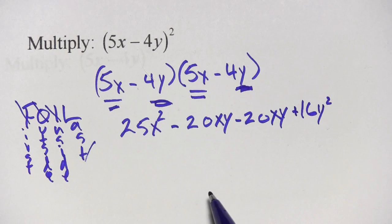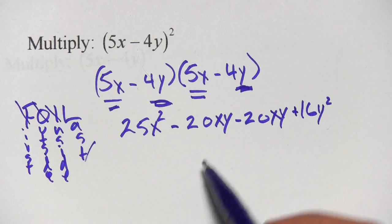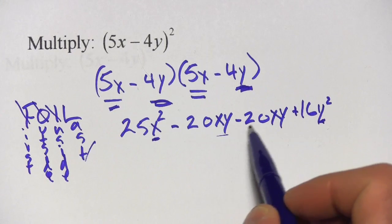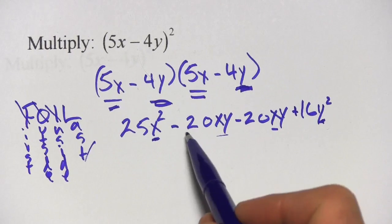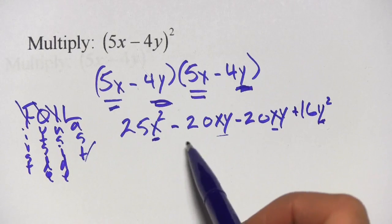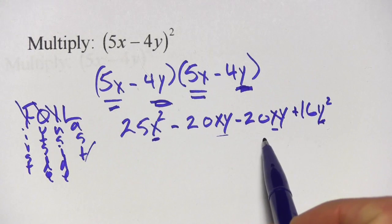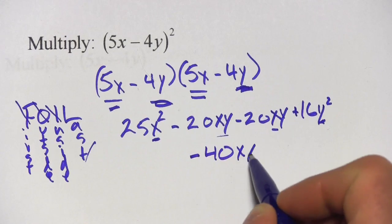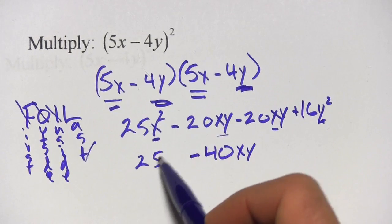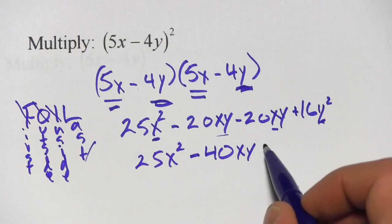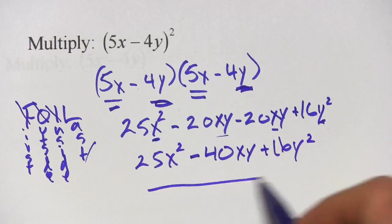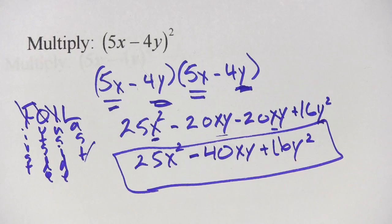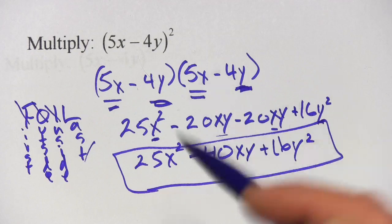The only thing we have left to do is to combine the like terms. And our terms now, we have an x squared term, a y squared term, and we have 2xy terms. So these two are the ones we're going to add together. A negative 20xy and a negative 20xy. You put those together, you get a negative 40xy. And then we just have our 25x squared and our 16y squared. And that is the answer when you multiply 5x minus 4y times itself.